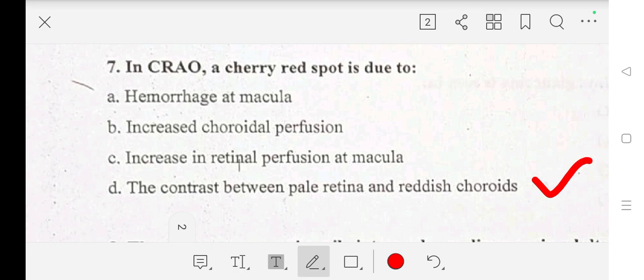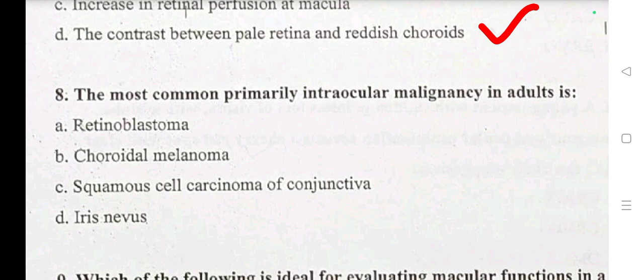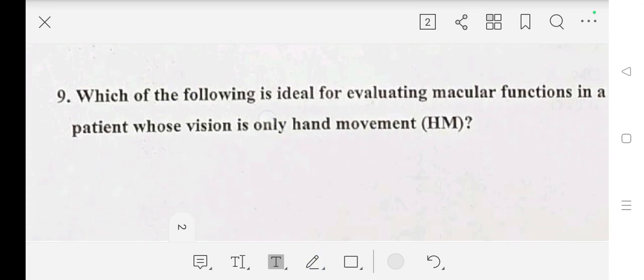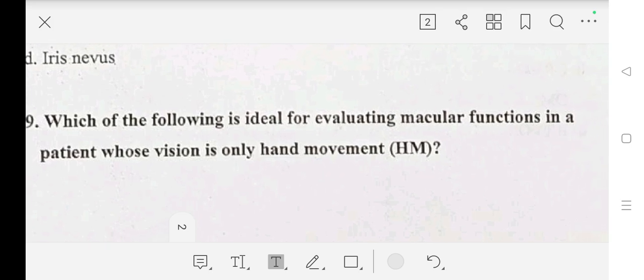Our answer is D: the contrast between pale retina and reddish choroid. Question number 8: the most common primary intraocular malignancy in adults is — A: retinoblastoma, B: choroidal melanoma, C: squamous cell carcinoma of conjunctiva, D: iris tumour. Our answer is B: choroidal melanoma.